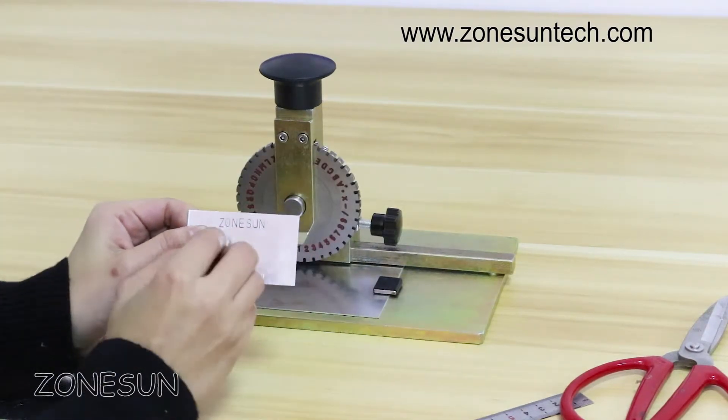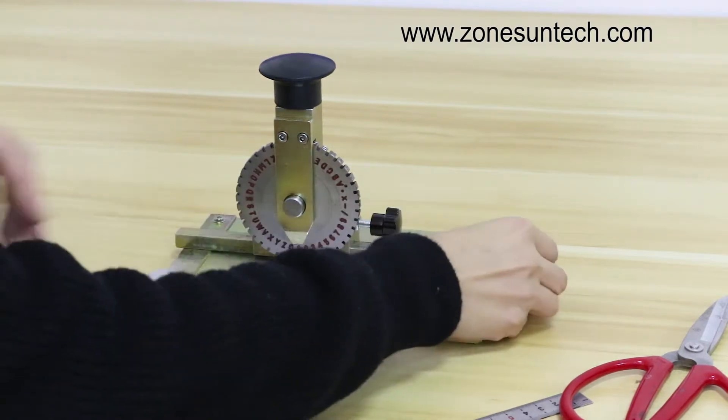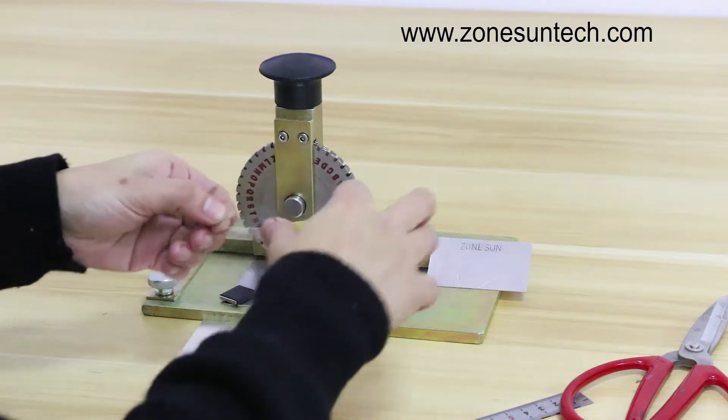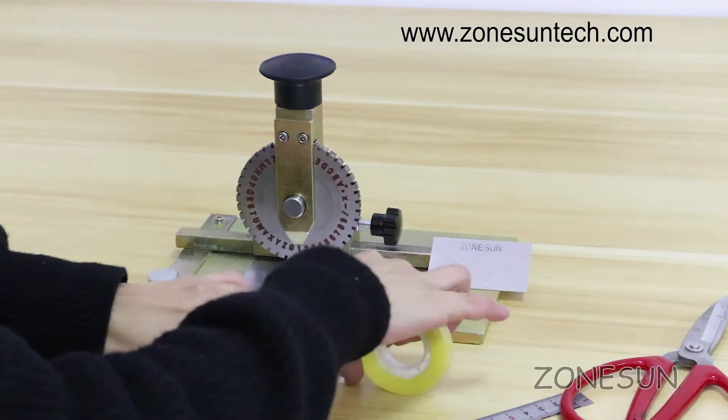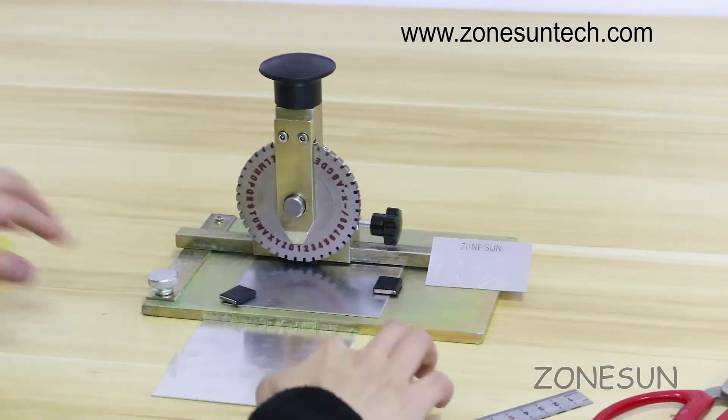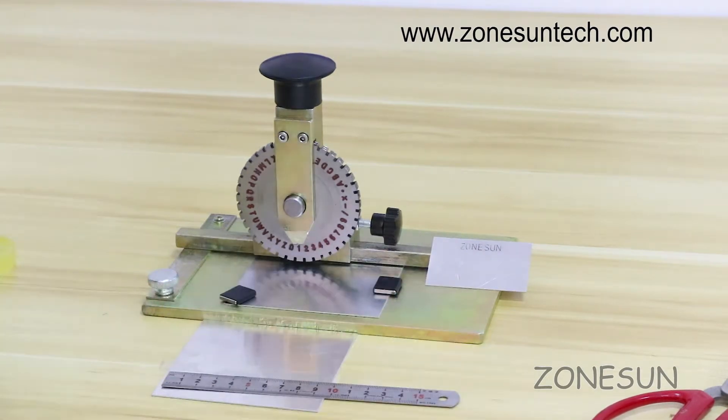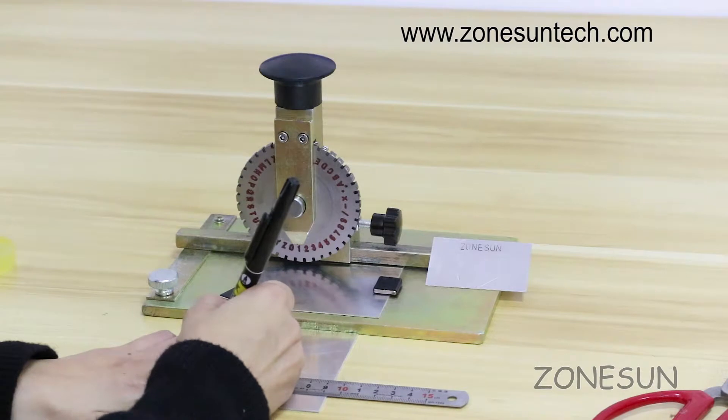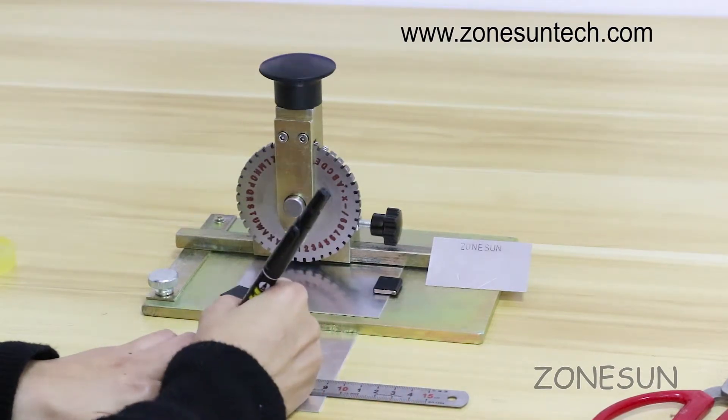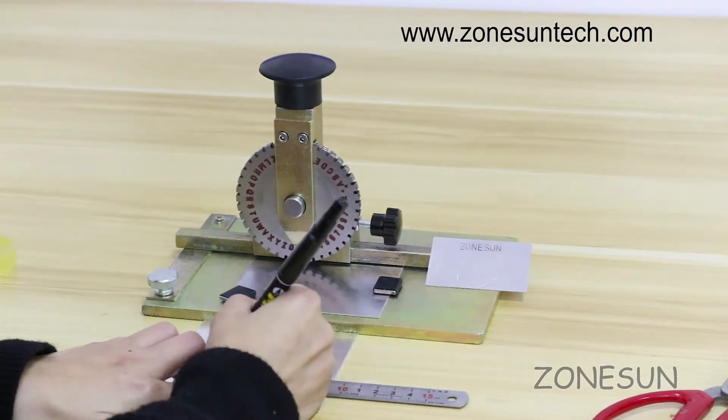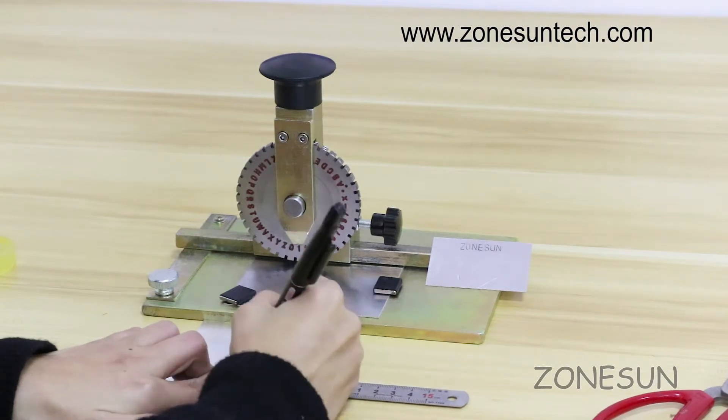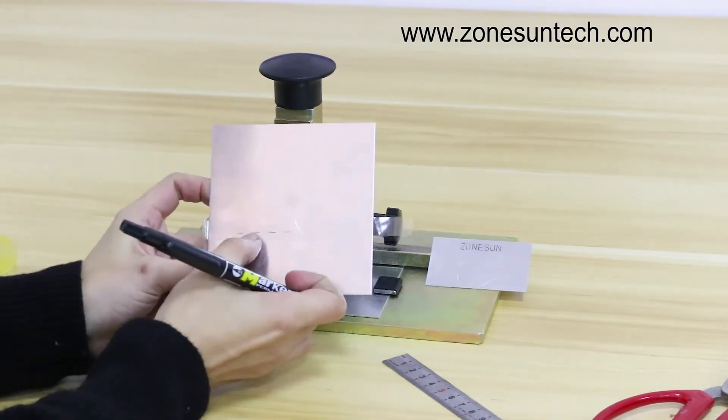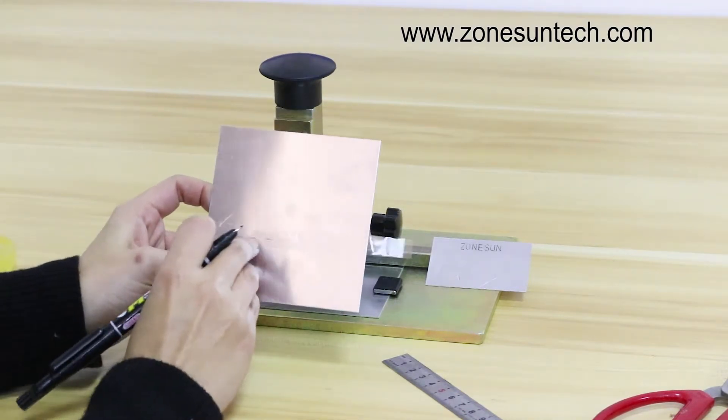Some clients are asking how to make the space between each letter to be the same. I have a small idea. You can use a tape like this to tape on the metal plate. Using a ruler to mark. Just like that. 5mm for one letter. Another 5mm for another letter. You can just mark it according to the space and the words you like.